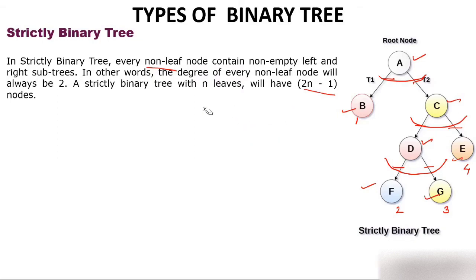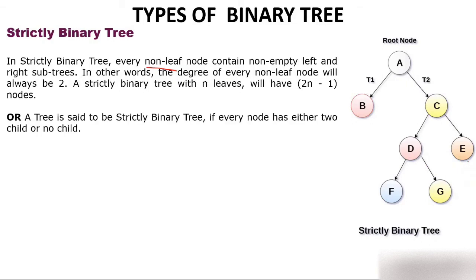Another definition of strictly binary tree: a tree is said to be strictly binary if every node has either two children or no children. For example, if node B has only one child, it is not a strictly binary tree because the rule is either two children or no children — one child is not allowed. Node A has two children, D has two children, and F has no children, so that tree qualifies.